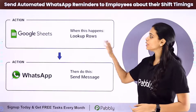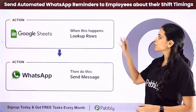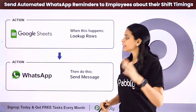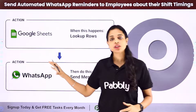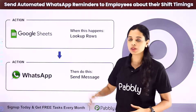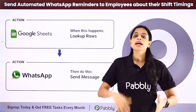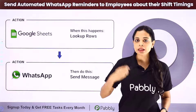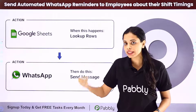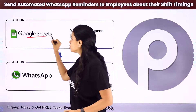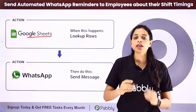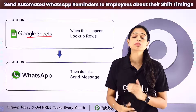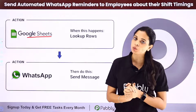In this video we are going to see how to send automated WhatsApp reminders to employees about their shift timings. Let's say you have all the details of your employees on a spreadsheet like Google Sheets, where you have the name, dates, and shift timings. You want to set up a workflow which runs every day, checks your Google Sheet, and if there is any employee with a shift two days later, it sends a reminder to that person through WhatsApp.